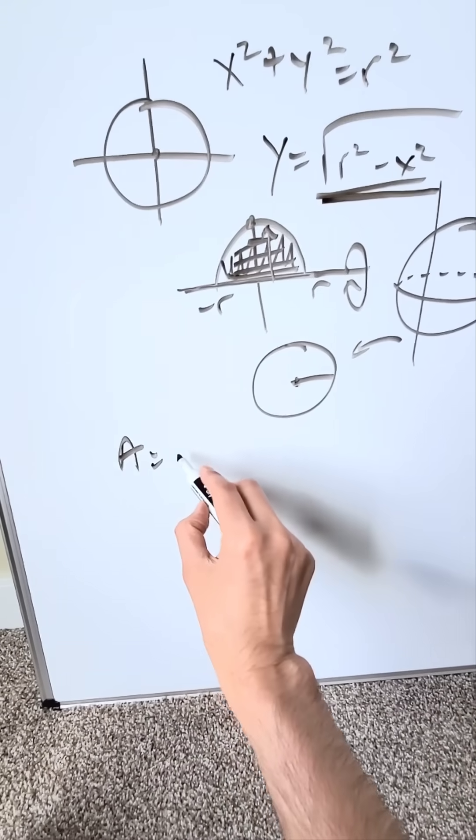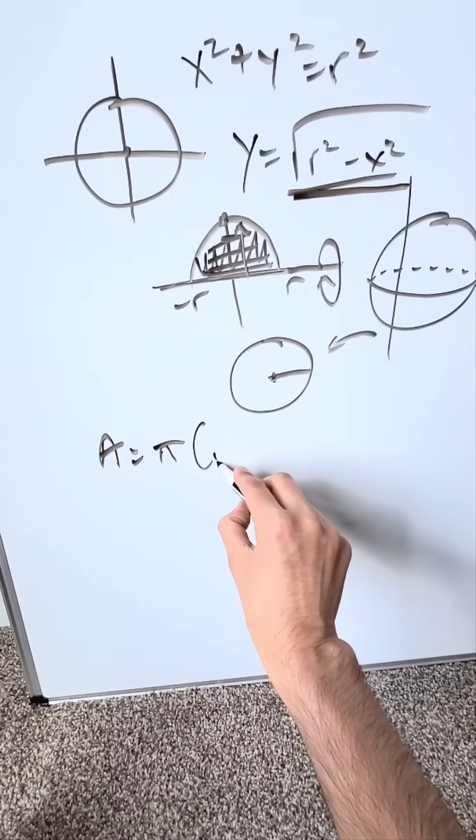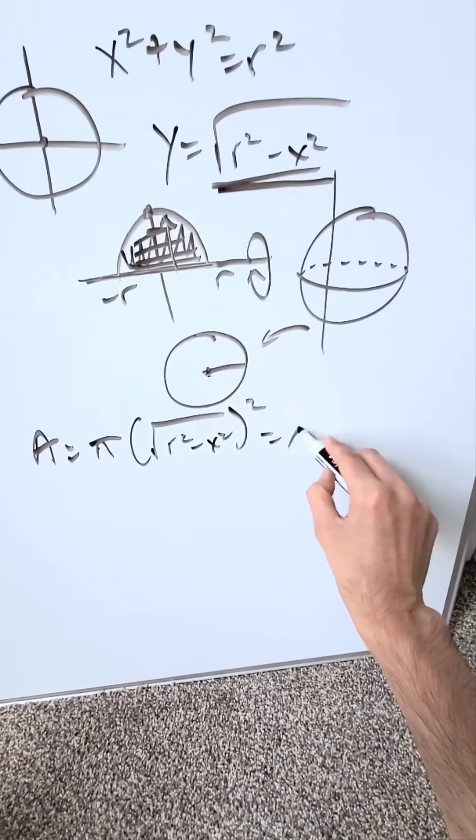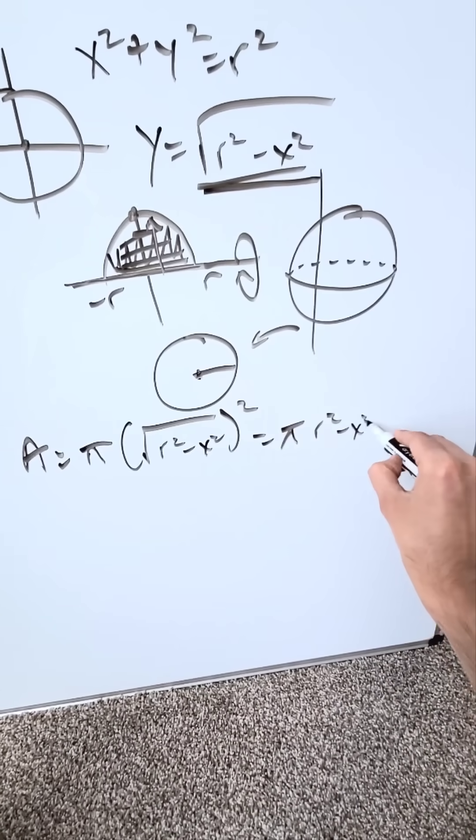The area of the circular slice is pi radius squared and it's going to be square root of r squared minus x squared, squared. It's easy. You're looking at pi times r squared minus x squared.